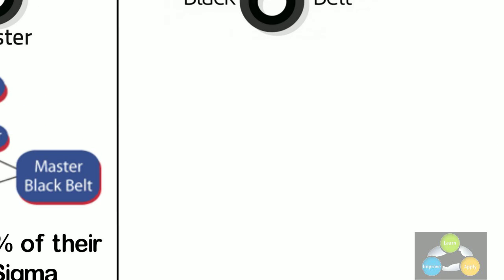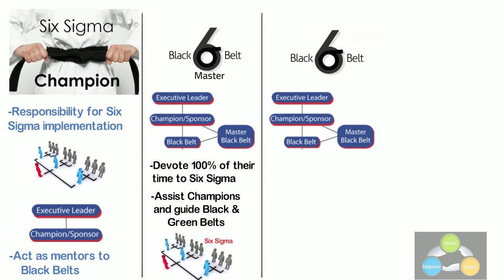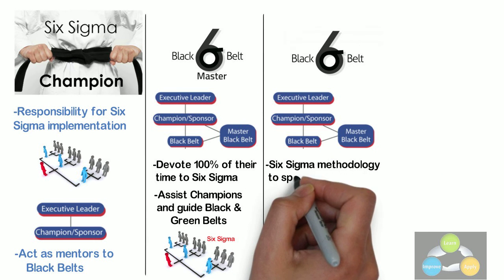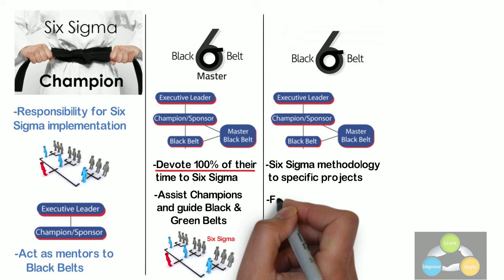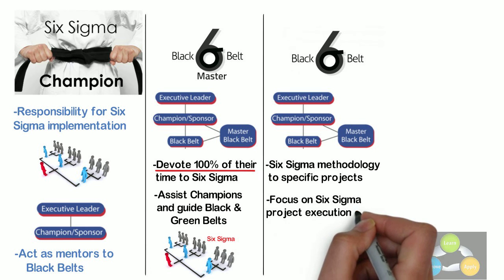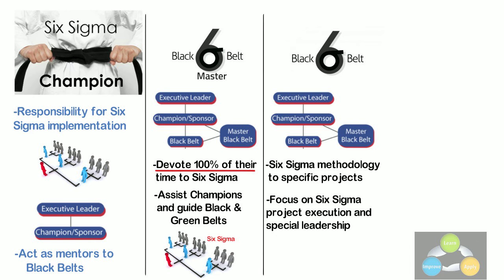Black Belts. They operate under the Master Black Belts to apply Six Sigma methodology to specific projects. They also devote 100% of their valued time to Six Sigma. They primarily focus on Six Sigma project execution and special leadership with special tasks.